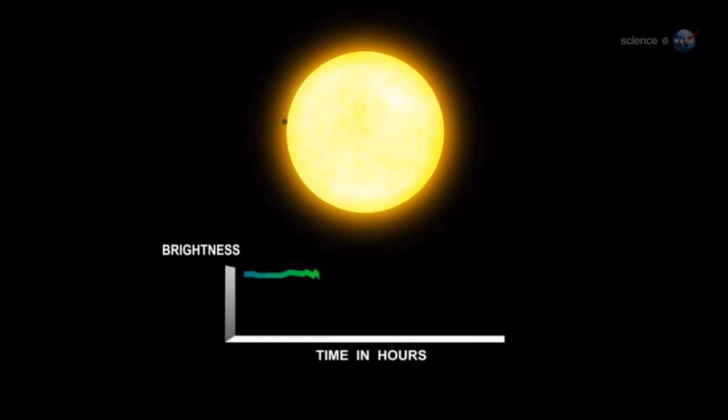Kepler works by looking for the slight dimming of starlight caused when a distant planet transits its parent star. Any dip in stellar brightness attracts the attention of the Kepler team and can prompt them to declare a planet candidate.